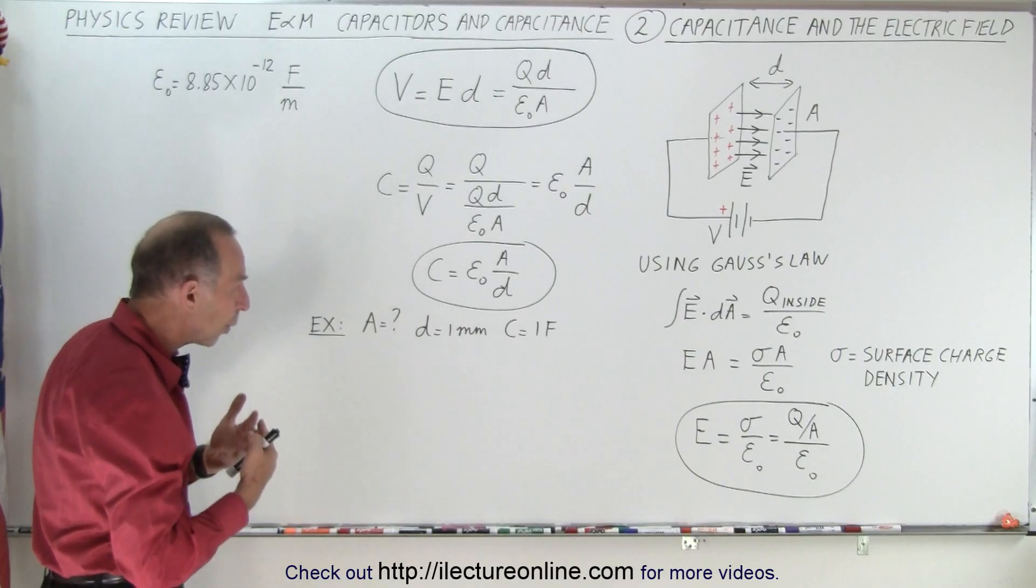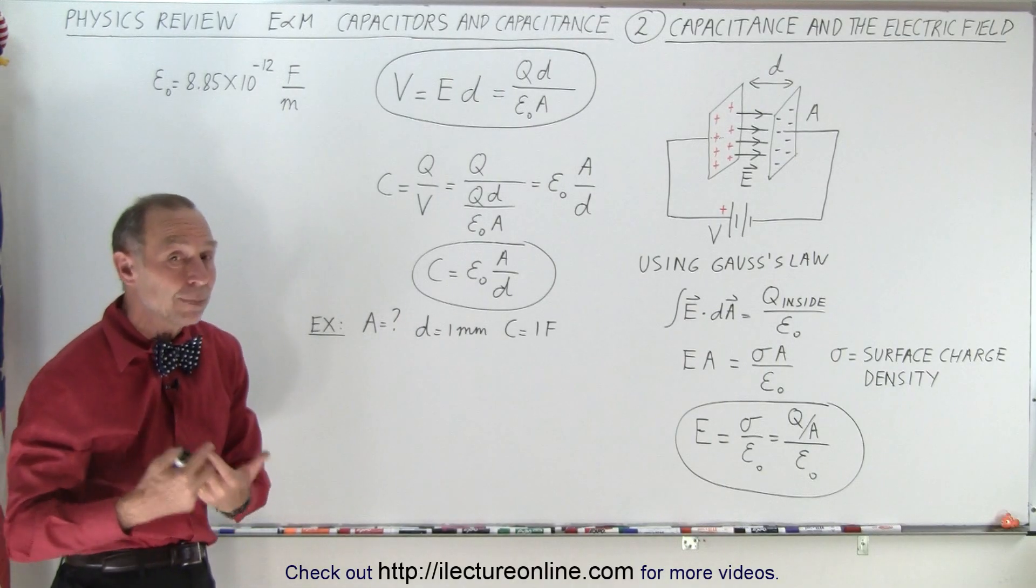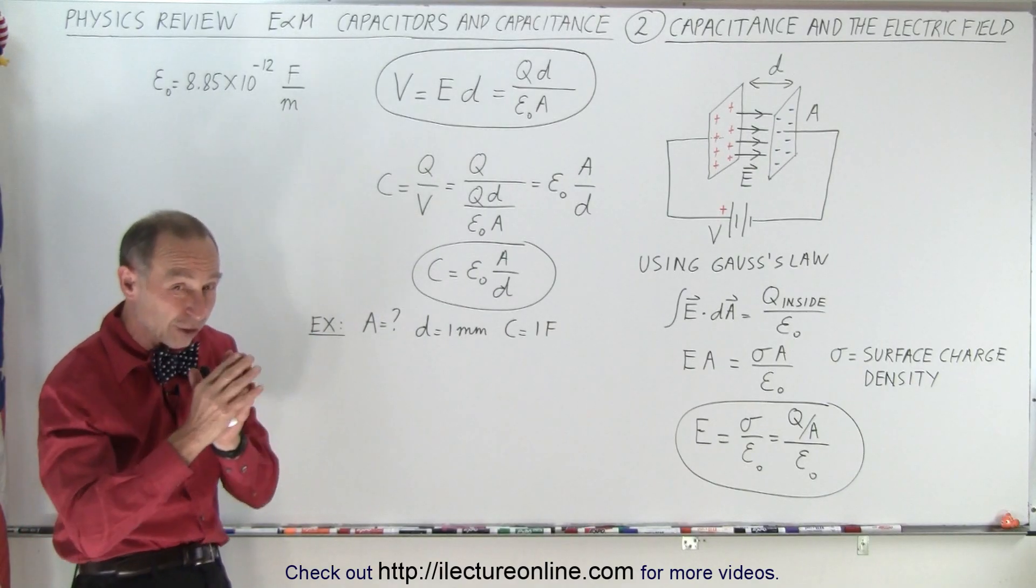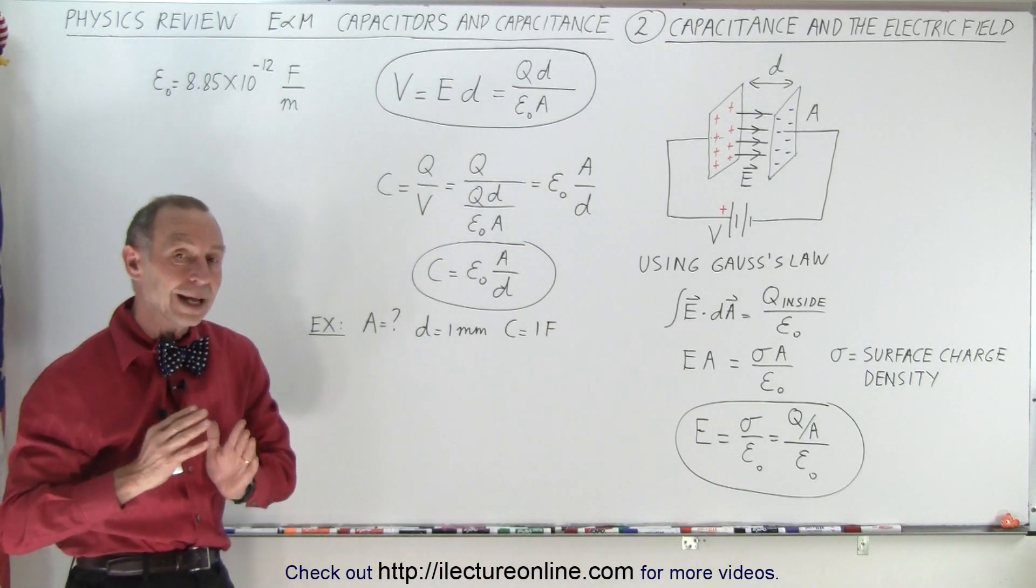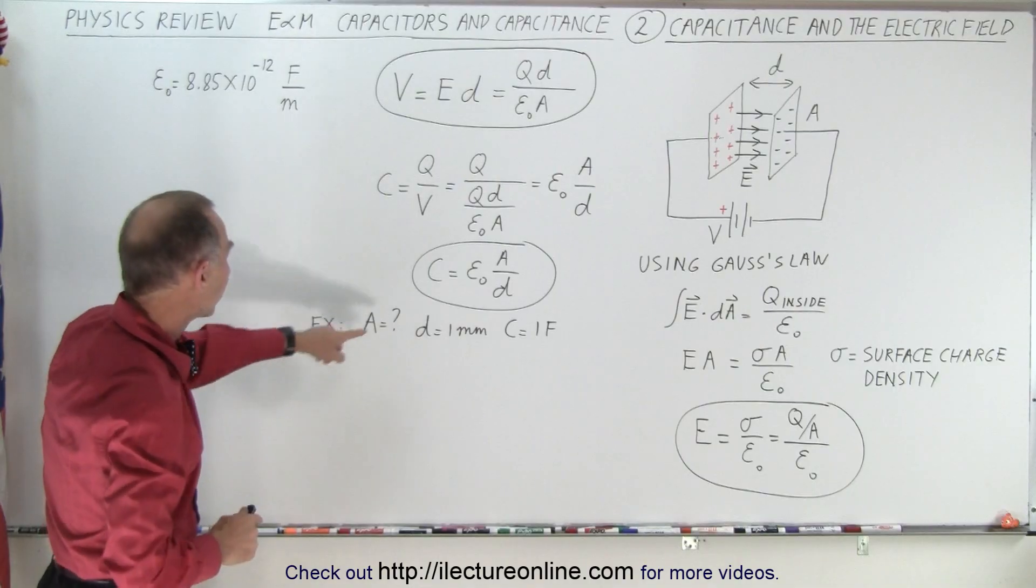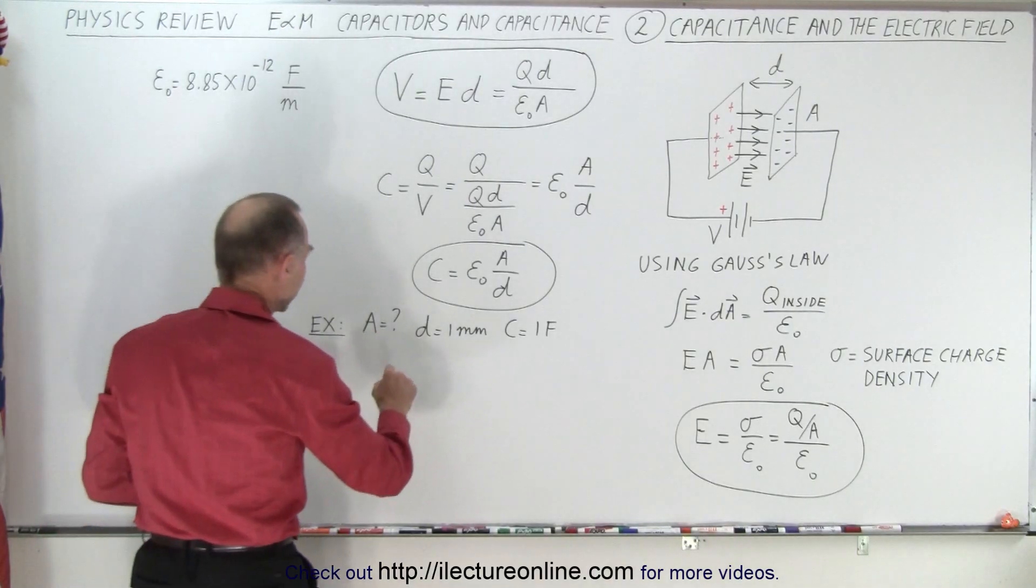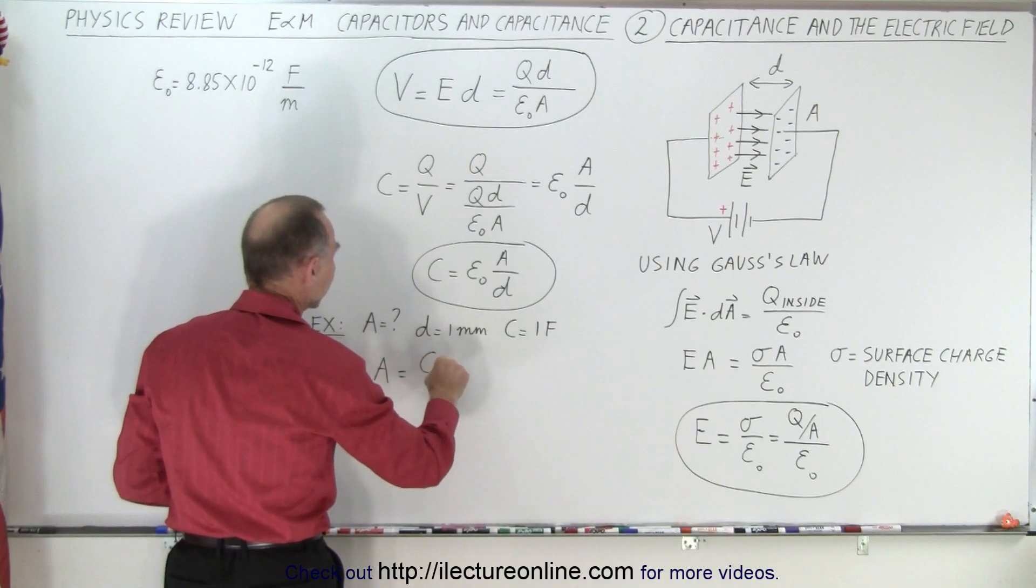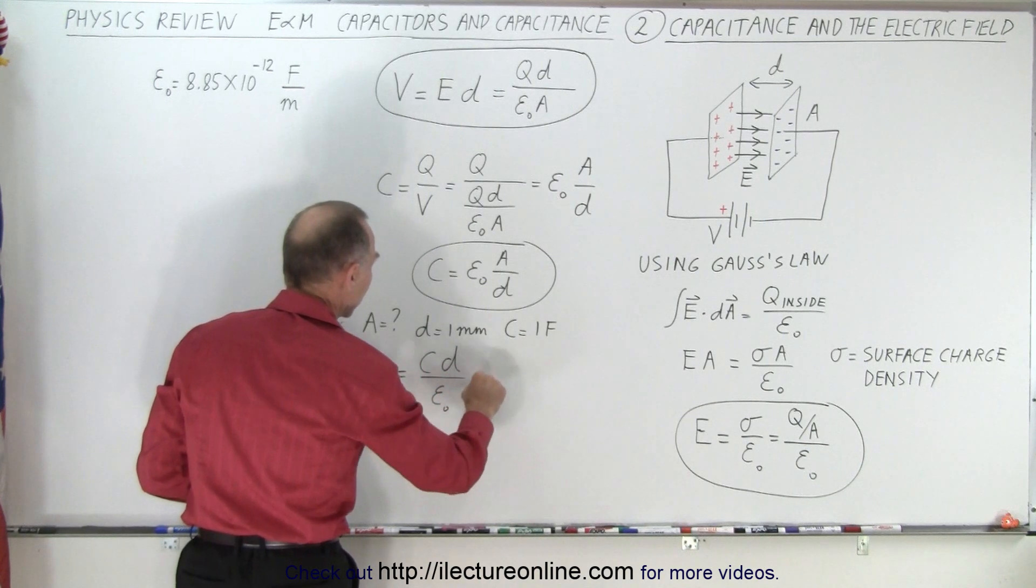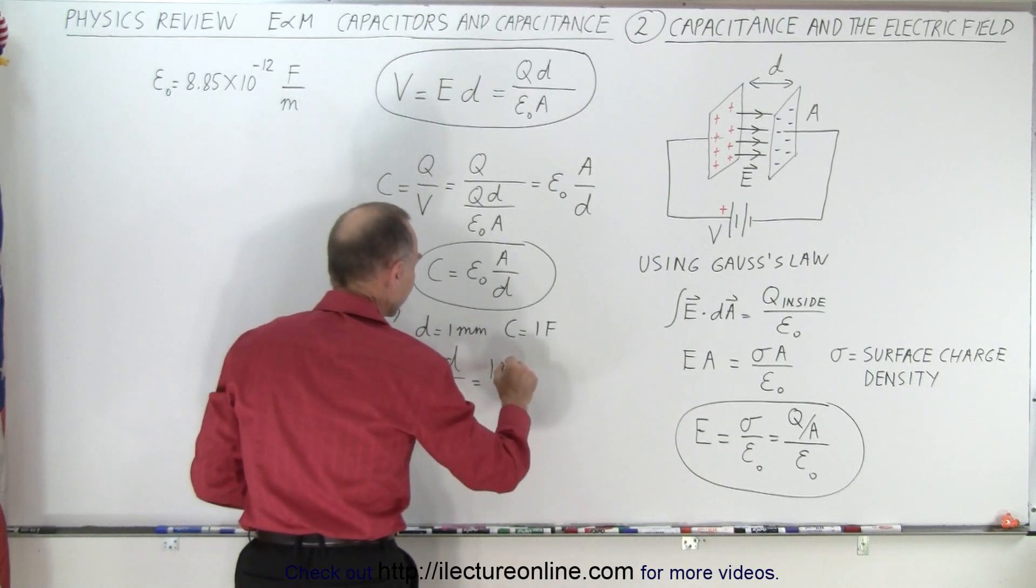But how big does a one farad capacitor need to be? In other words, a capacitor that will hold one coulomb of charge, which is an enormous amount of charge, when you apply just a single one volt to those plates. Well, we have to rewrite this equation as follows. We can say that the area of the plate is equal to the capacitance times the distance between the plates divided by epsilon nought.